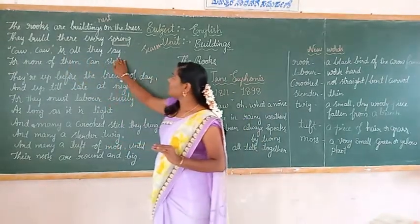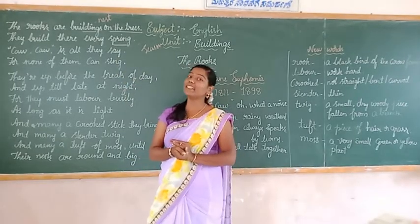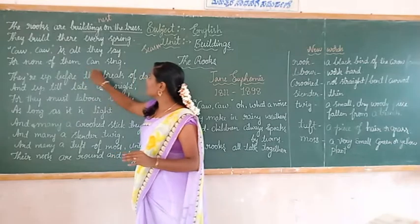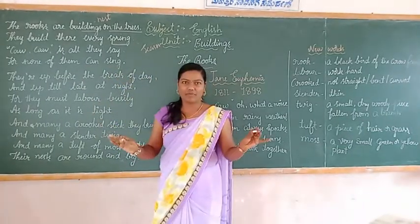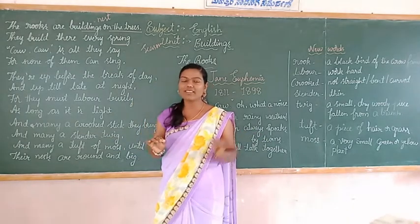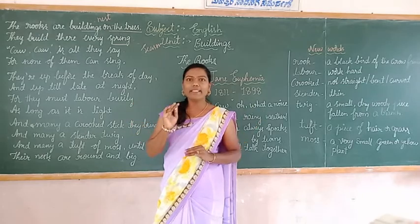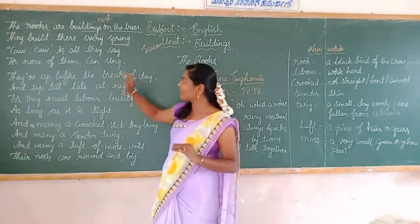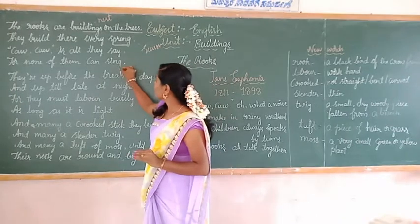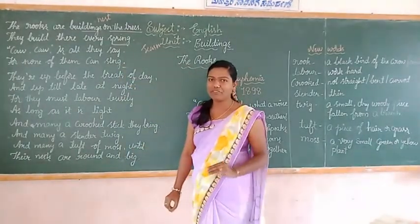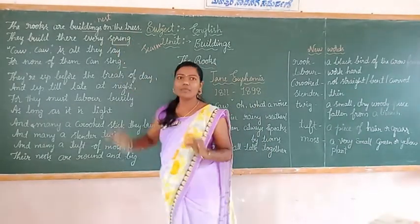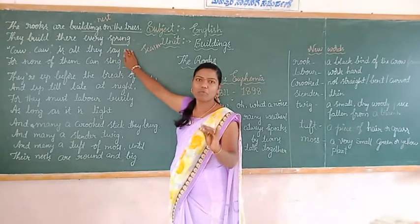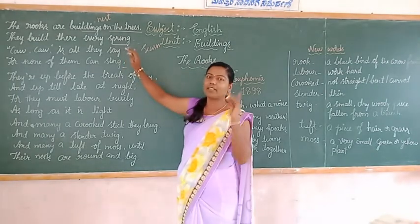Caw caw is all they say. Have you heard the sound of caw caw? Yes. It is the cry of the crow. It sings like caw caw. For none of them can sing — it can't sing anything, it only sings caw caw. How do the rooks sing? The rooks sing like caw caw. I hope you understood the first stanza. The rooks build their nests on the tree, every spring. Spring is the name of a season. Caw caw is all they sing, all day, the whole day. For none of them can sing — it only sings like caw caw.